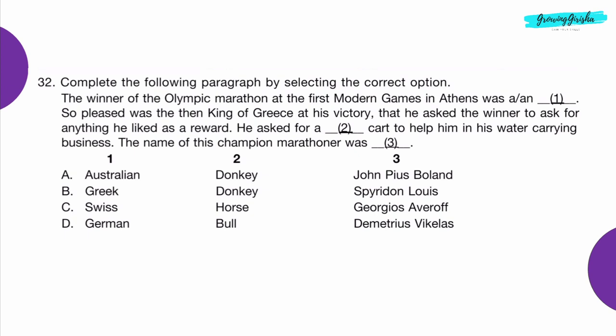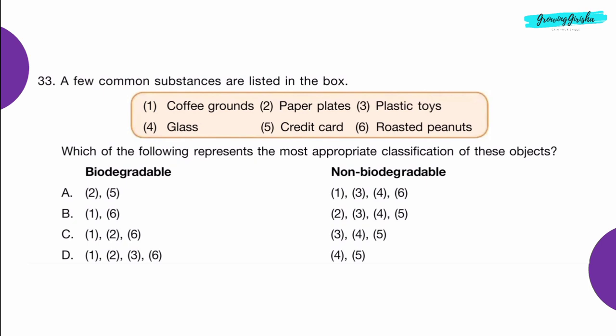Question 32: Complete the following paragraph by selecting the correct option. The winner of the Olympic marathon at the first modern games in Athens was ___ So pleased was the then king of Greece at his victory that he asked the winner to ask for anything he liked as a reward. He asked for a ___ cart to help him in his water-carrying business. The name of this champion marathoner was ___. Option B: Greek, Donkey, Spiridon Louis.